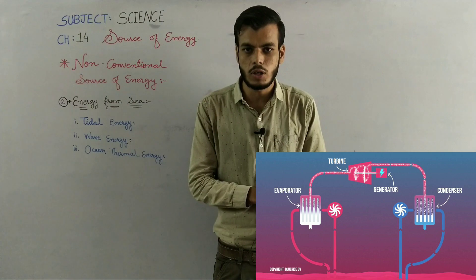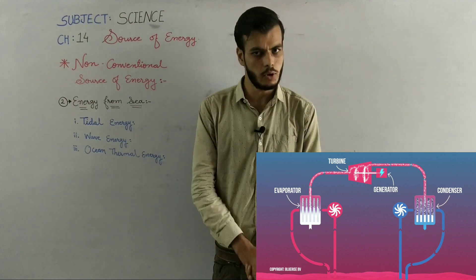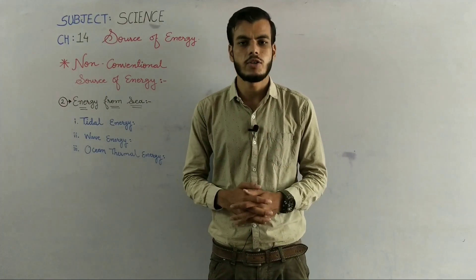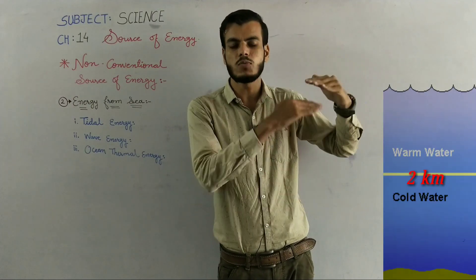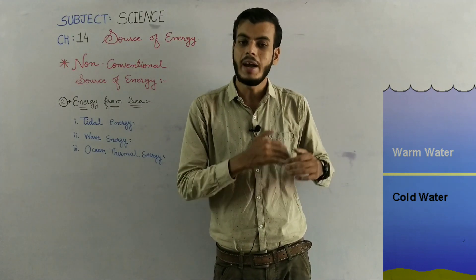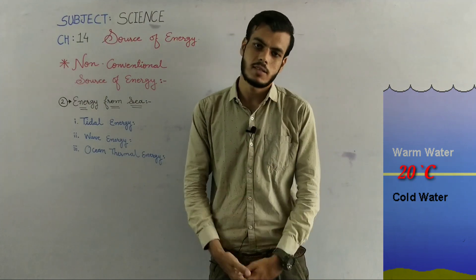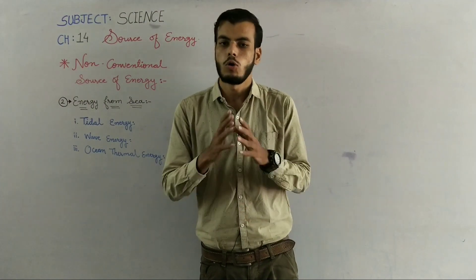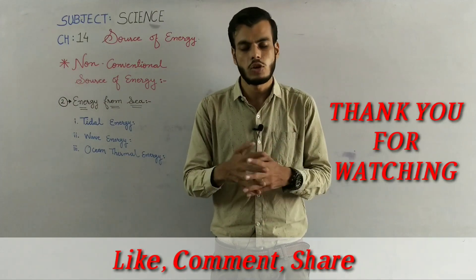यह flow continuously चलता रहेगा और electricity produce होती रहेगी। तो यह था ocean thermal energy। यह ocean thermal energy ऐसे place पर बना सकते हैं जहाँ पर hot water and cold water दोनों के बीच में approximately 2 km का difference हो, और दोनों के temperature में 20 degree Celsius का difference होना ज़रूरी है। I hope ocean thermal energy और energy from the sea समझ में आया होगा। Thank you for watching this video.